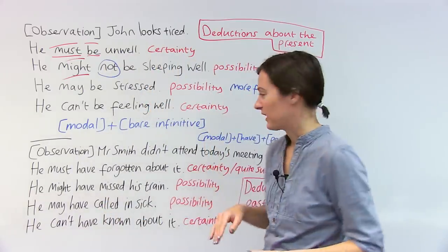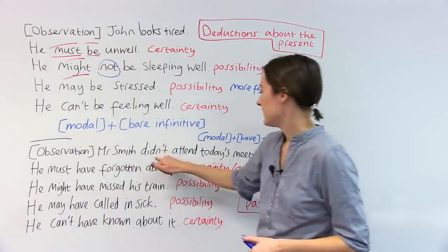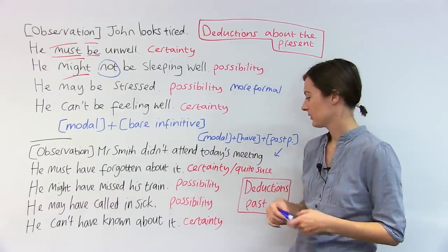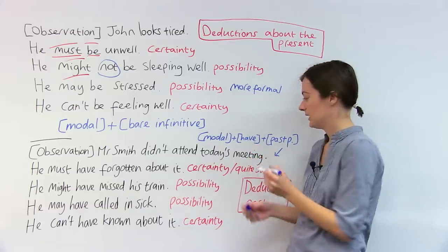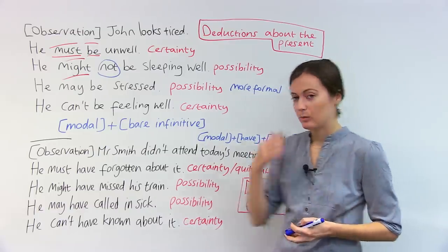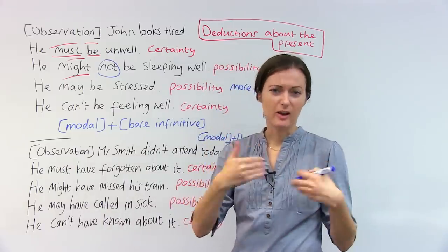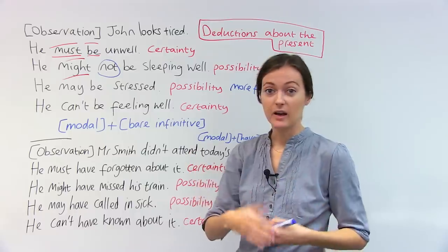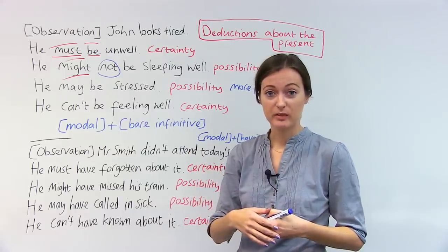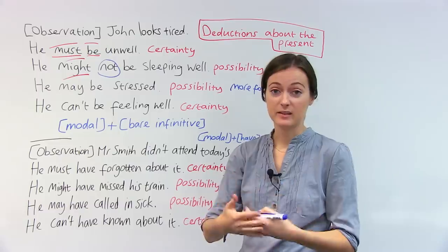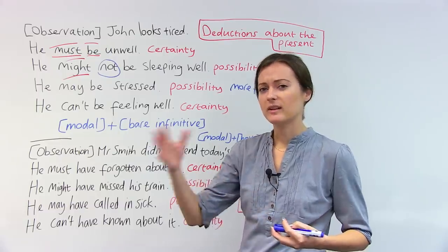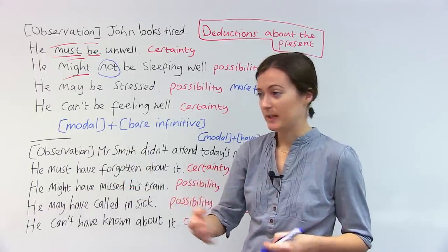Here's a different observation. Mr. Smith didn't attend today's meeting. Full stop. So what we see in experience, I go to the meeting, I expected to see Mr. Smith there. He was not there. That is my evidence, that's my observation. So what kind of deduction do I make following that?